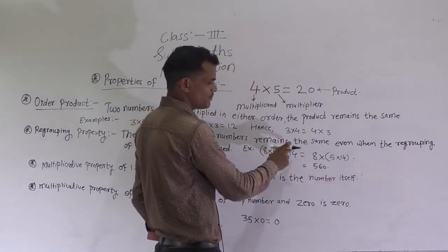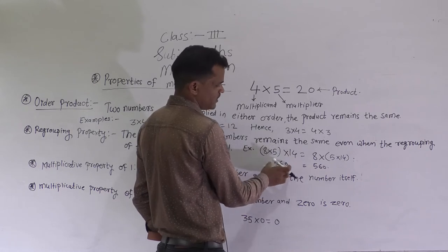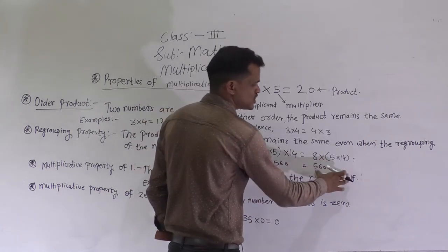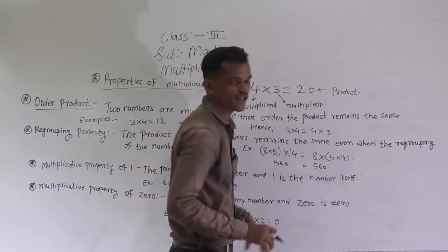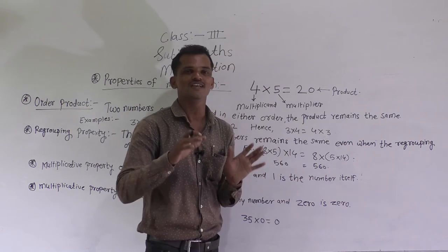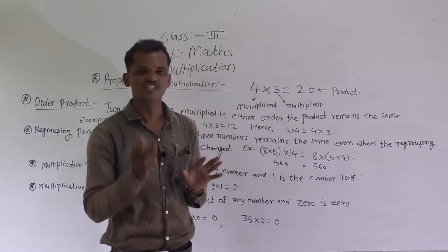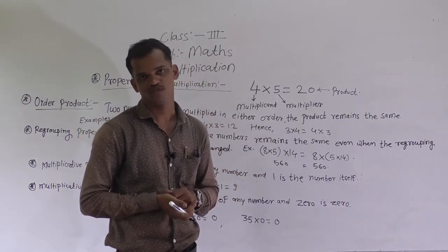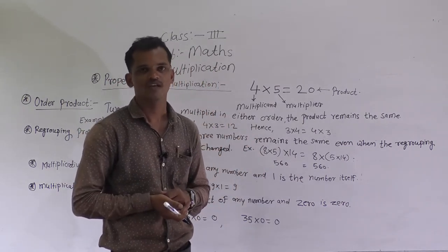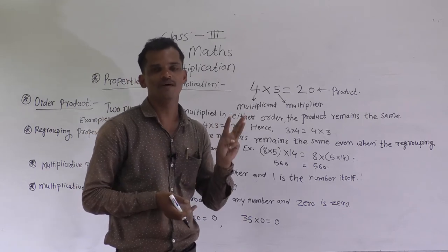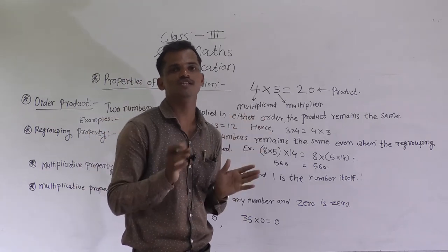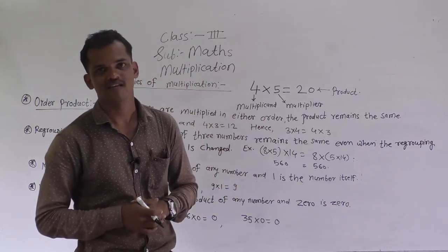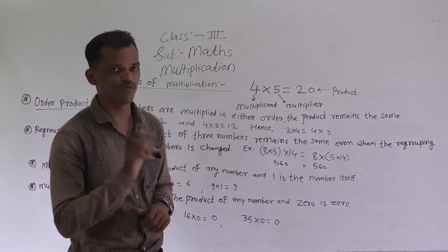If we multiply that, you will get 560, and here also 560. This means if we change the regrouping, the product remains the same. If there are 3 numbers and we change the grouping, the product remains the same.